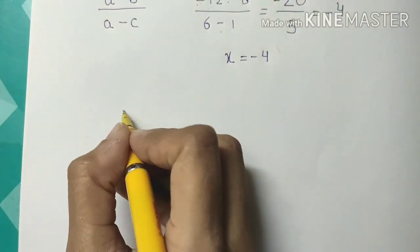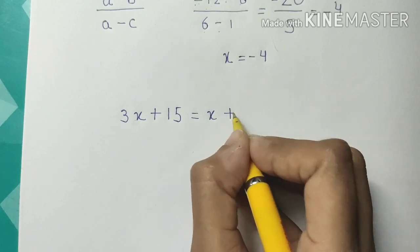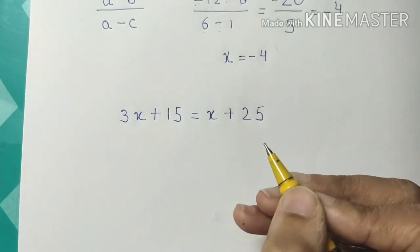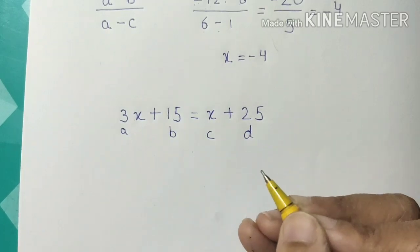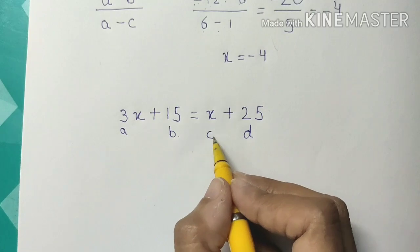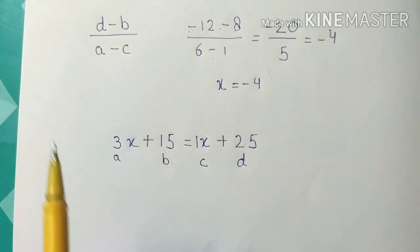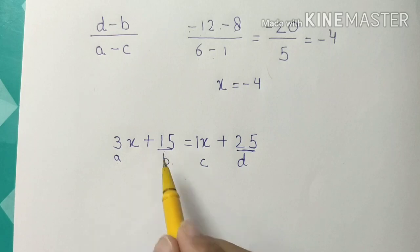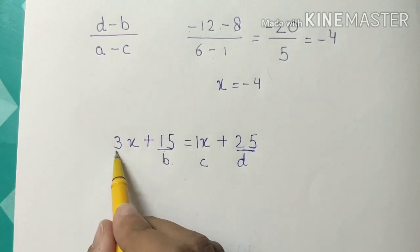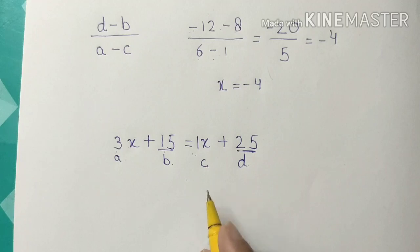Our next example is 3x + 15 = x + 25. We'll solve it orally. A is 3, B is 15, C is 1, and D is 25. The formula is (D minus B) upon (A minus C): 25 minus 15 is 10, upon 3 minus 1 which is 2. So 10 upon 2 equals 5. Your answer is x equals 5.